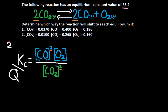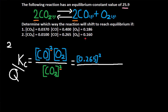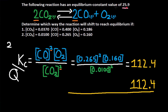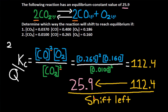For the second part of this question, it's the same as what we did for the first one, but now we have different concentrations. CO has a concentration of 0.265, O2 is 0.160, and CO2 is 0.0100. Using our calculator, we get Q equal to 112.4. Comparing this to the given Kc of 25.9 on a number line, 112.4 is to the right and 25.9 is to the left. To go from 112.4 to 25.9, you have to go left, so there's a shift left to reach equilibrium.